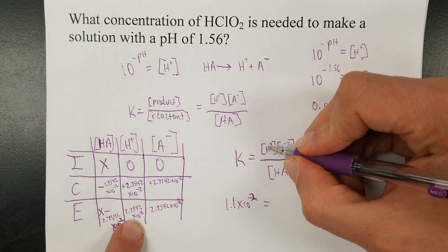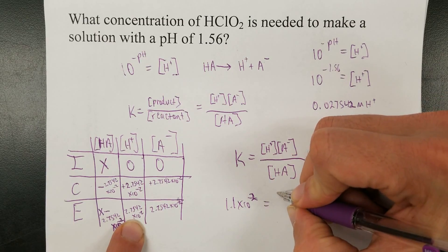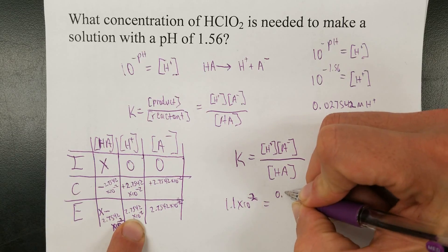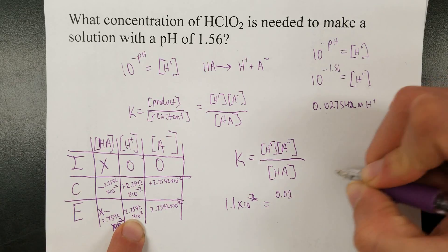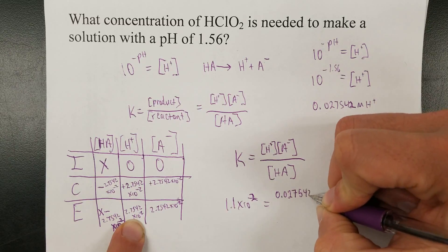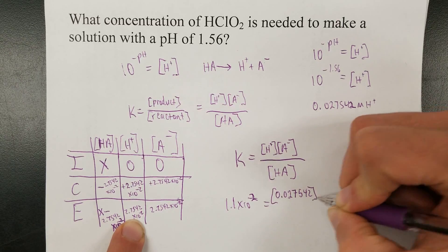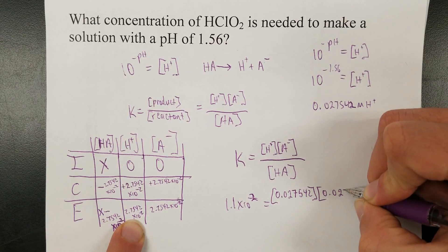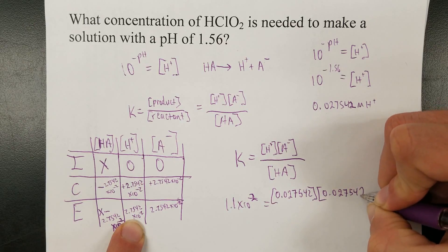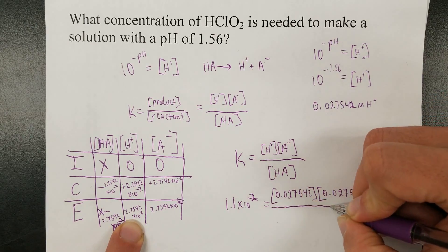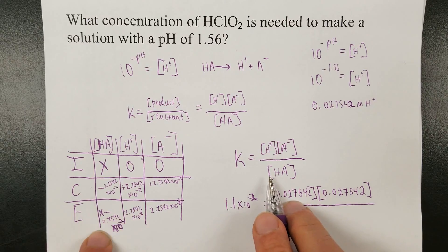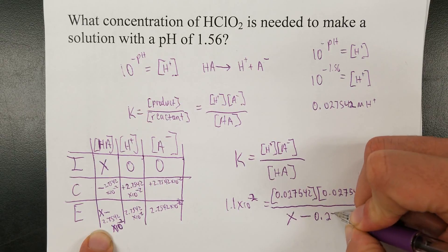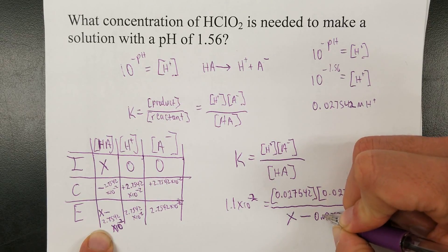So I'll just write it again for clarity. K equals hydrogen ion concentration times anion concentration over acid concentration. 1.1 times 10 to the negative 2nd is the value of K from the table. Value of H is the concentration right here. That doesn't matter scientific notation or not for this particular one because it's not my final answer. So 0.027542.